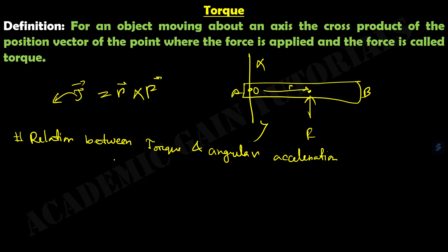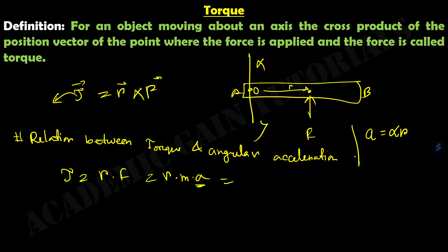If we write the formula of torque as tau equals R into F, and according to Newton's second law F equals M times acceleration A, and since linear acceleration A equals angular acceleration alpha times R, we can write torque as R into M into alpha, which gives M R squared times alpha. M R squared is known as moment of inertia, I.